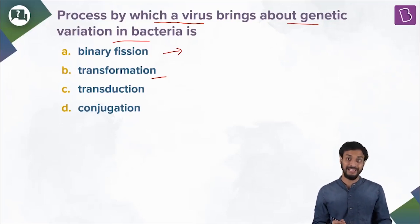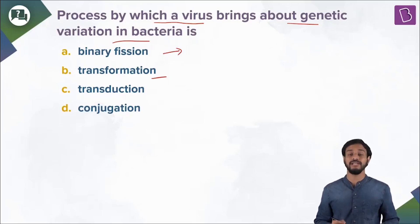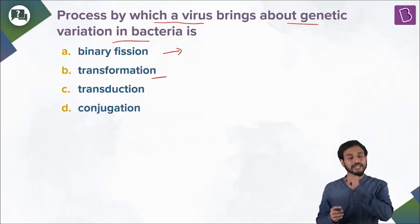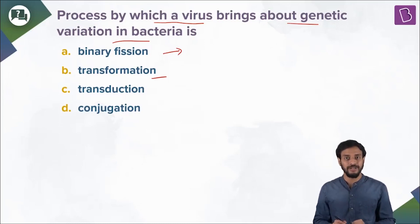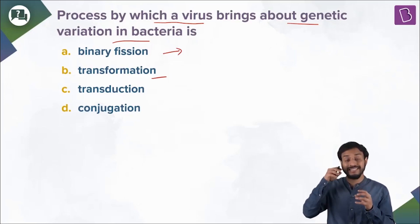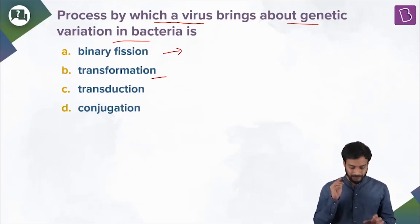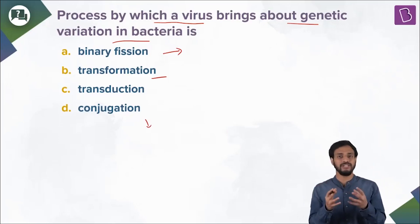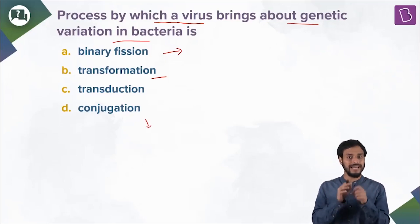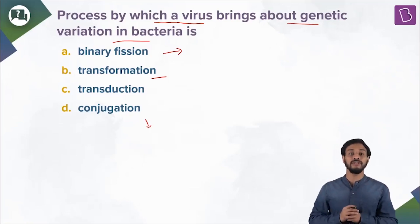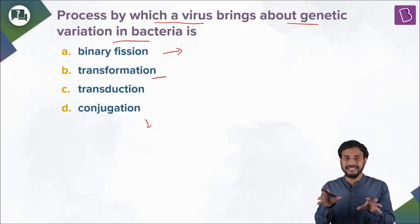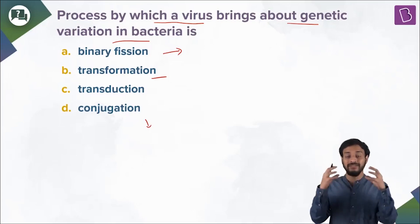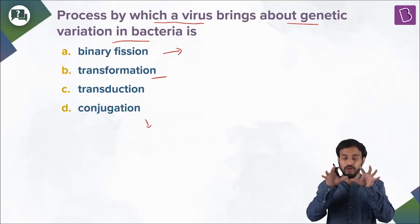What is transduction? It's a very important process. A genetic material is inserted into a bacterial cell through a virus — a bacteriophage. Through the bacteriophage, the genetic material is injected into the bacterial cell. Conjugation is a process similar to sexual reproduction, but actually known as parasexuality — gene transfer happens through cell-to-cell contact via a conjugation tube.